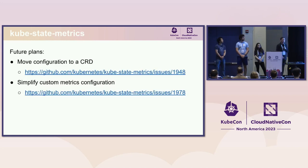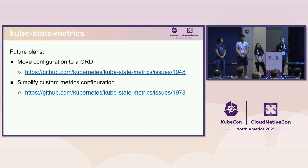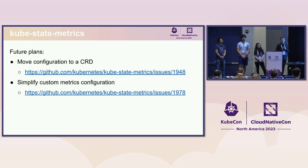However, we noticed that the original implementation wasn't ideal. We are currently trying to improve it by first moving to a CRD so we don't need to restart kube-state-metrics every time, and also trying to simplify the configuration because there were some corner cases we didn't handle well and the original syntax wasn't the best for users. So we're trying to figure that out — if you want to contribute, feel free to join us.